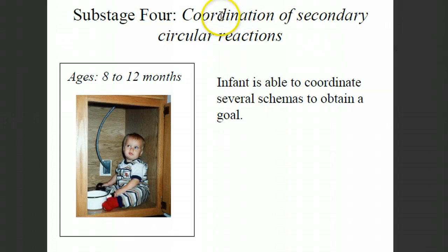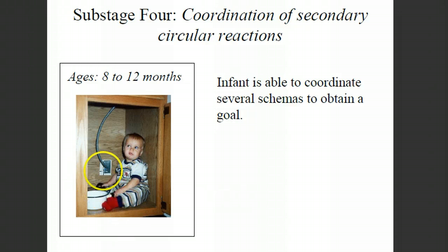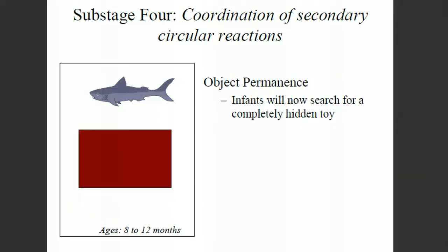Sub-stage four is coordination of secondary circular reactions, from ages eight to twelve months. At this point, the infant is capable of interacting with the world with different movements and knows that a particular motor activity will produce a certain sensation. Now we coordinate multiple secondary circular reactions. The infant might know how to open a cabinet door and might know about banging a pot, so now we see a combination: opening the door, climbing in, and playing with the pot. The infant is able to coordinate several of these schemas to obtain a goal — behavior is no longer just random, but purposeful toward achieving a goal.